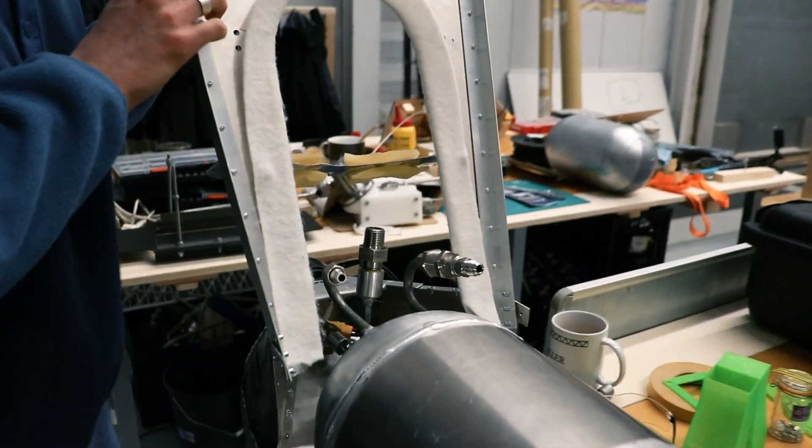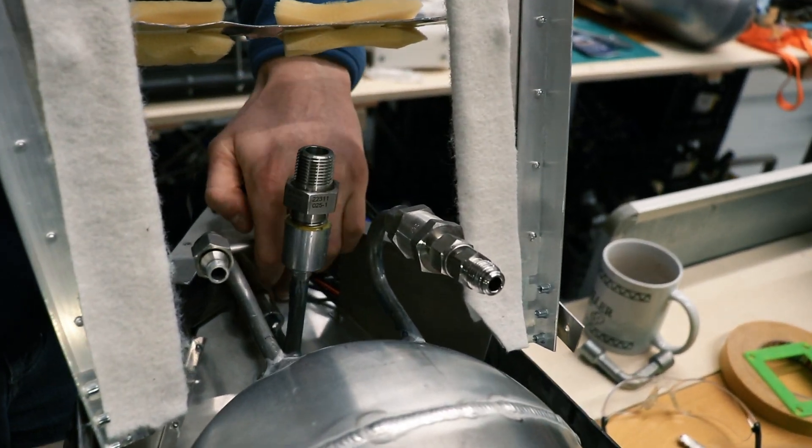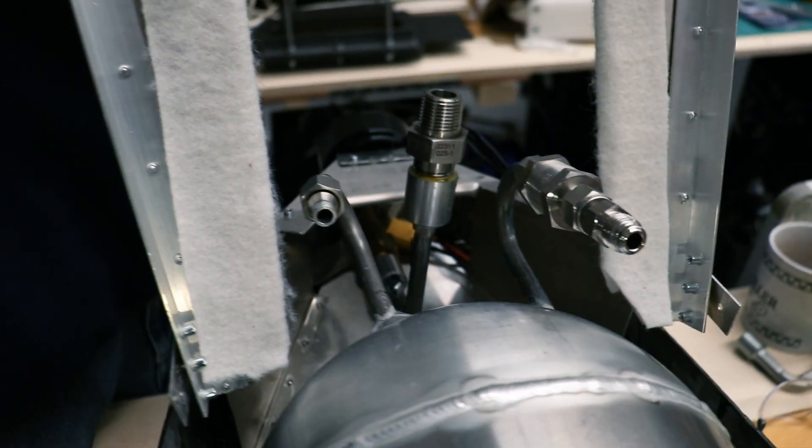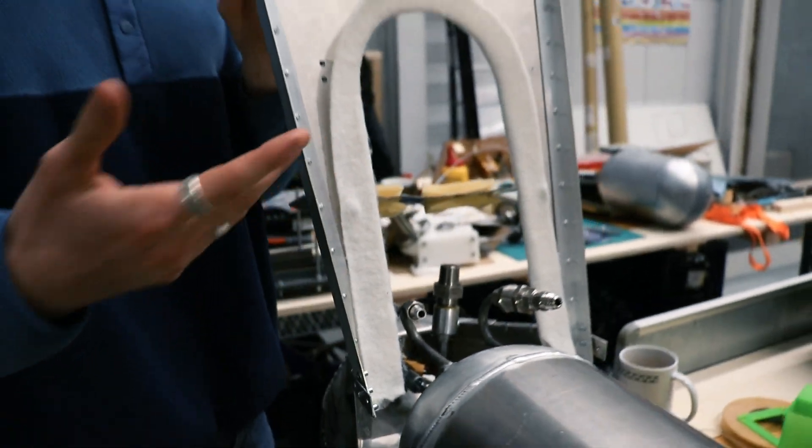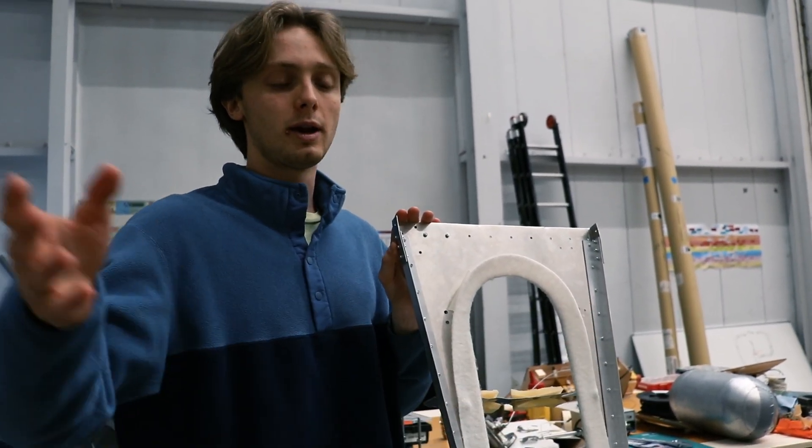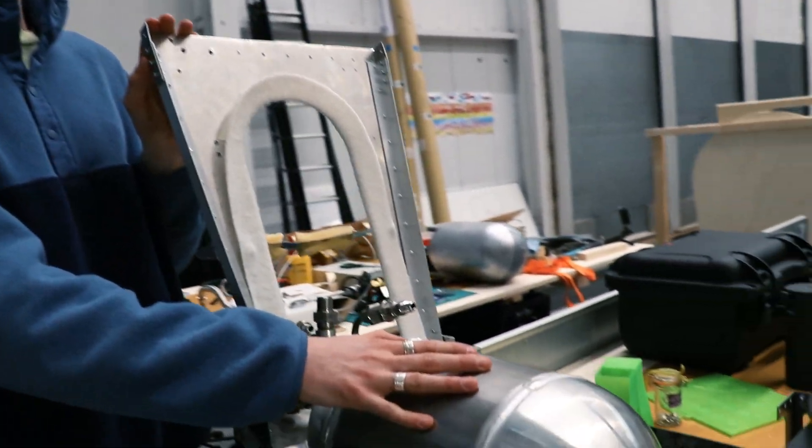Right here you can see a burst disk, and on the back bottom here there is a safety valve. These two are safety systems. They make sure that if for some reason the pressure in the tank would rise too much, they blow open and all the pressurized gas can leave the system instead of our tank blowing up.